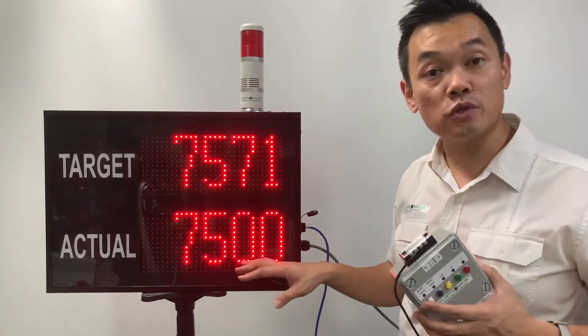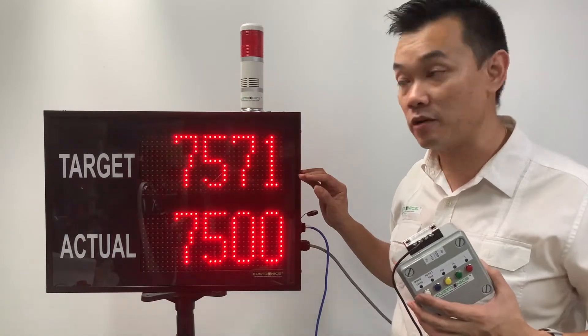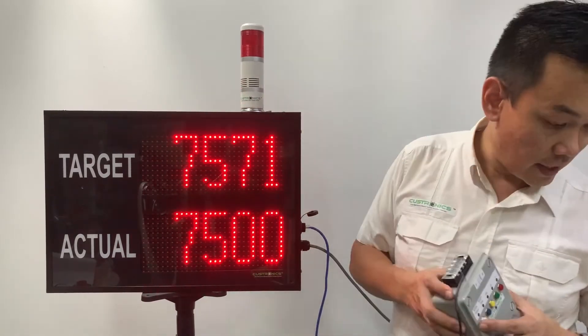So whenever the 7550 hits the threshold that we set just now, it will trigger the buzzer. Let's start.